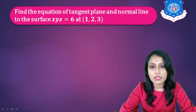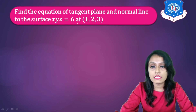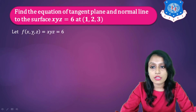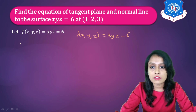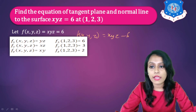Next example: find the equation of tangent plane and normal line to the surface xyz = 6 at point (1, 2, 3). We write this as F(x, y, z) = xyz − 6 = 0. Now we find Fx, Fy, and Fz. Fx (partial derivative with respect to x) gives yz; Fy gives xz; and Fz gives xy.